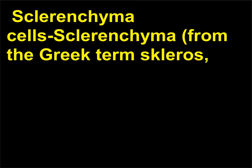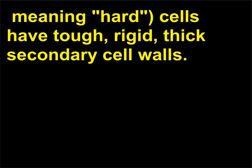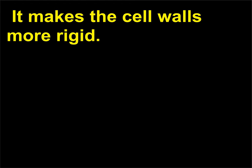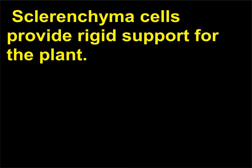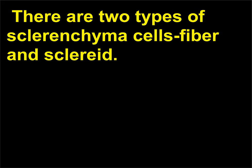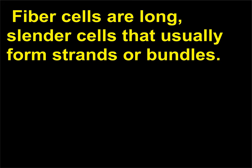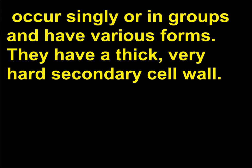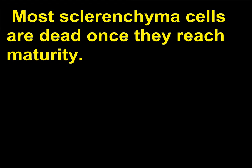Sclerenchyma cells — from the Greek 'skleros,' meaning hard — have tough, rigid, thick secondary cell walls. These secondary cell walls are hardened with lignin, which is the main chemical component of wood and makes the cell walls more rigid. Sclerenchyma cells provide rigid support for the plant. There are two types of sclerenchyma cells: fiber and scleroid. Fiber cells are long, slender cells that usually form strands or bundles. Scleroid cells, sometimes called stone cells, occur singly or in groups and have various forms, with a thick, very hard secondary cell wall. Most sclerenchyma cells are dead once they reach maturity.